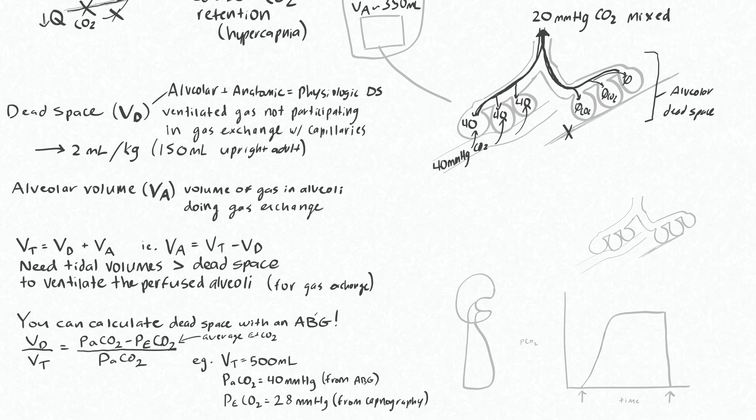So the formula for this would be that the ratio of your dead space ventilation to your total tidal volume is equal to your arterial CO2 minus your average expired CO2 over your arterial CO2. This is just telling you what fraction of the total possible partial pressure of CO2 that you could be expiring that you actually are expiring.